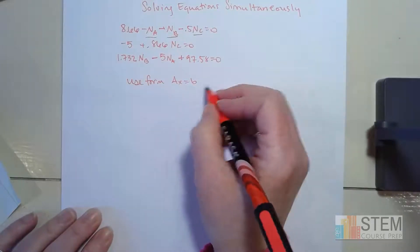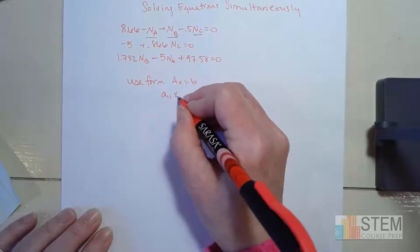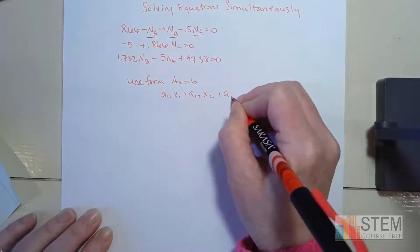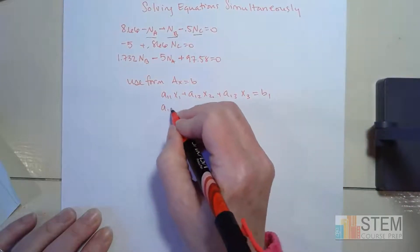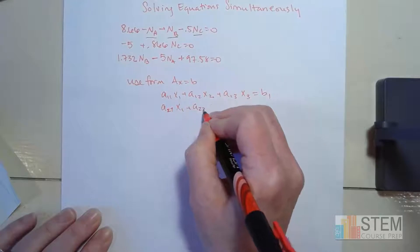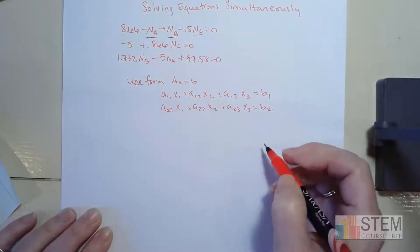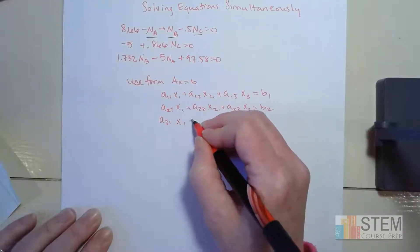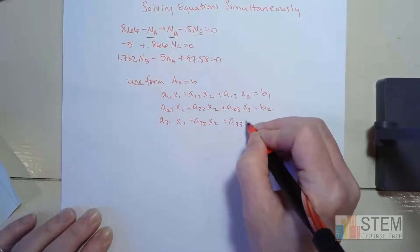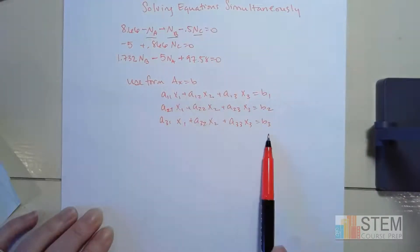Let's do a generic example first and then go back to this one. Say we have a system of equations: A₁₁x₁ + A₁₂x₂ + A₁₃x₃ = B₁; then A₂₁x₁ + A₂₂x₂ + A₂₃x₃ = B₂; and A₃₁x₁ + A₃₂x₂ + A₃₃x₃ = B₃. This is just a generic 3×3 set of equations. The B values could be zero or non-zero, positive or negative.